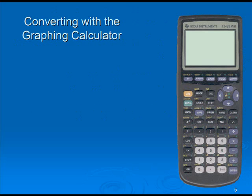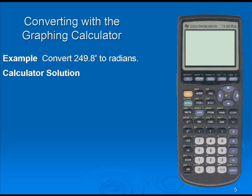Let's take a look at converting with the graphing calculator. For example, convert 249.8 degrees to radians. Here is the calculator solution. First, we must put the calculator in Radian mode.